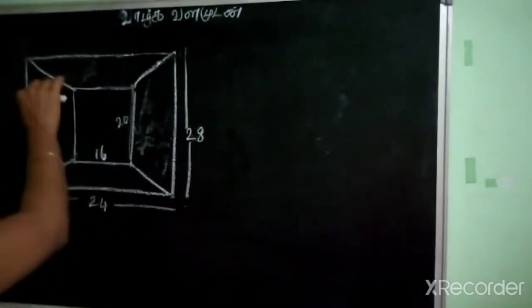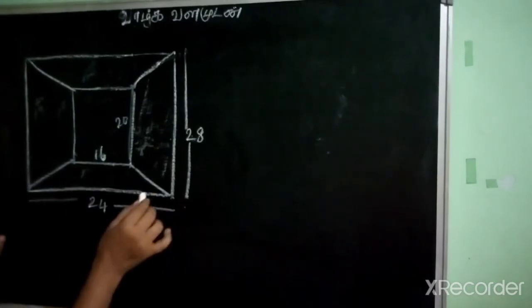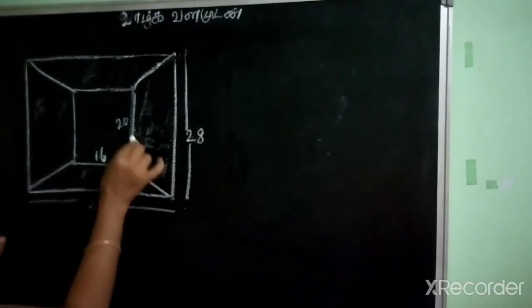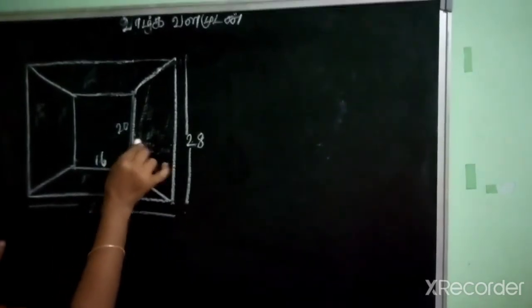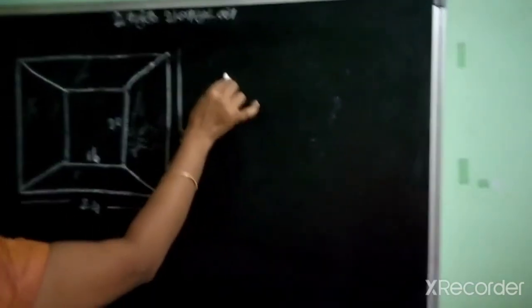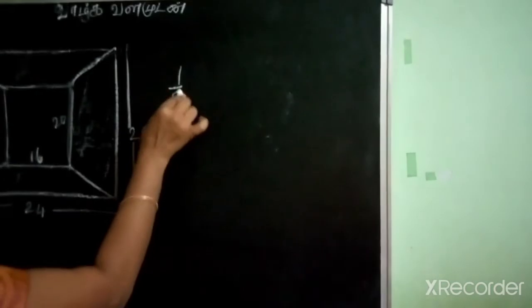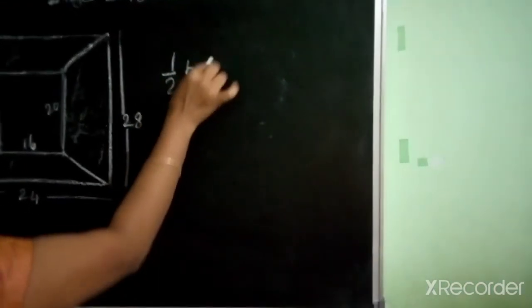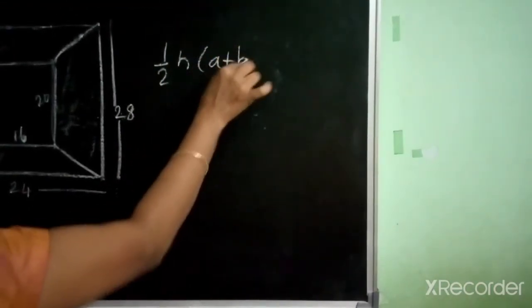Now, the frame has 4 sections — the area of each section of the frame. Each section is in the shape of a trapezoid. The formula for a trapezoid is half times height times (a plus b).